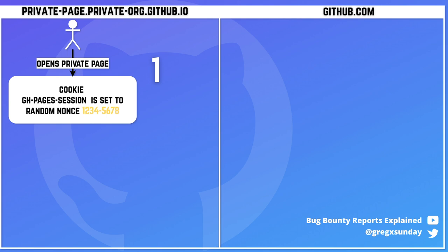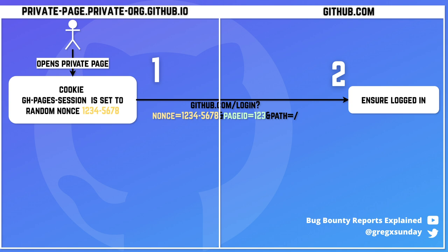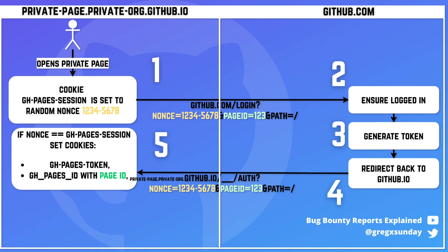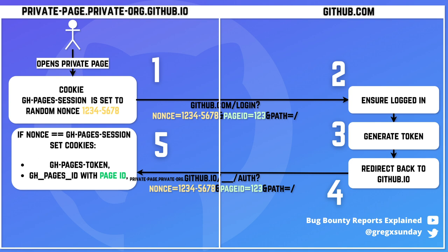First, GitHub.io sets a random nonce inside the GitHub Pages session cookie. Then it redirects the user to GitHub.com with this nonce as a parameter, but also with a page ID and the path. Then GitHub.com checks if the user is logged in, generates a token, and redirects the user back to GitHub.io. Those three parameters are passed throughout the whole flow. Then GitHub.io checks if the nonce from the parameter is equal to the nonce from the cookie. If it is, the token gets put into the cookie and the page ID is also put into the cookie. With those cookies, the user can visit the GitHub page they wanted to view.